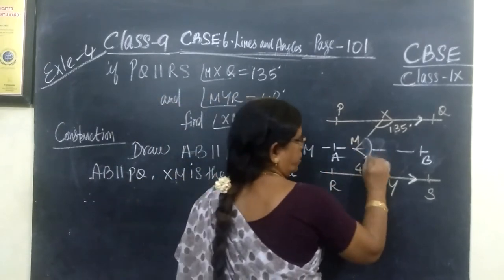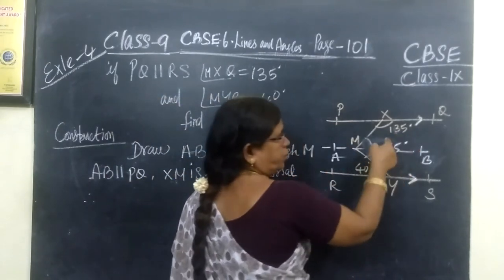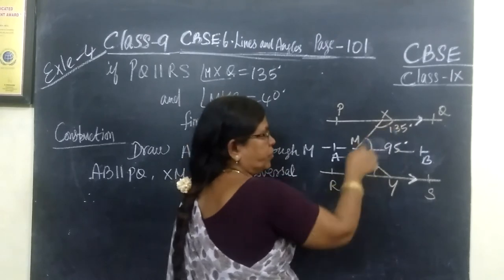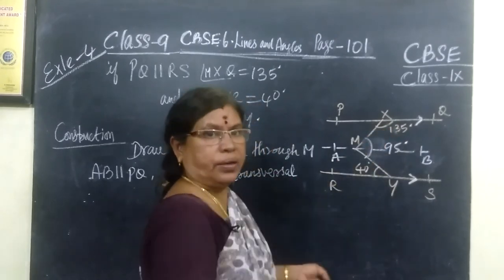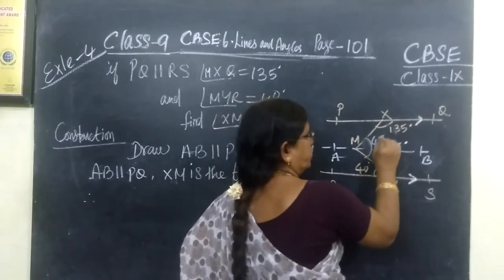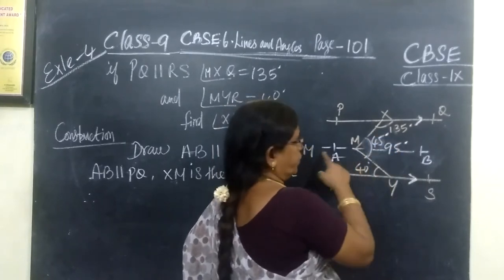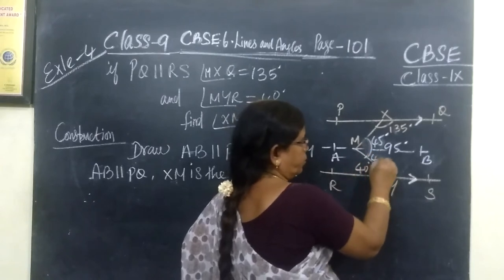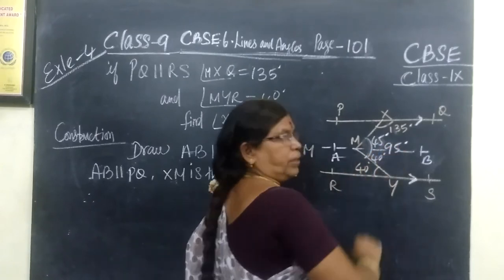The answer for this is 95. Since the sum of these two angles 180 degrees co-interior angle, so if it is 135, definitely this is 45. And alternate angles are equal taking these two parallel lines. So this also 40. So totally 95.